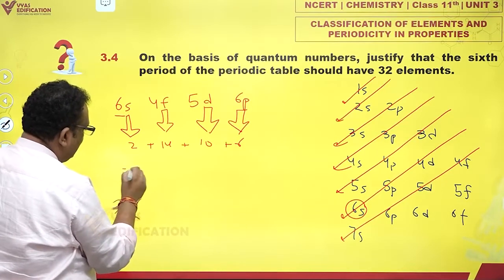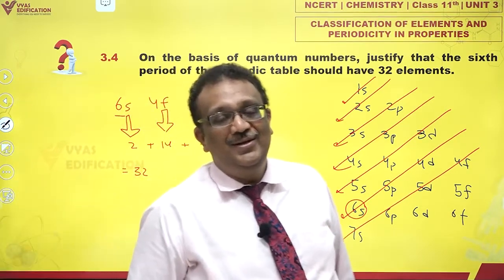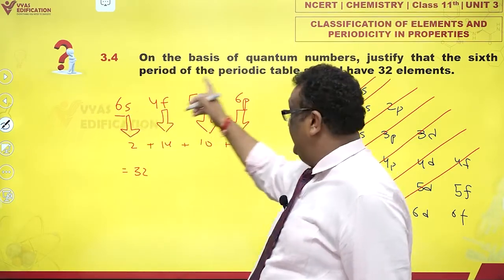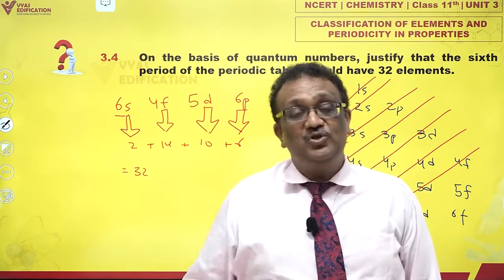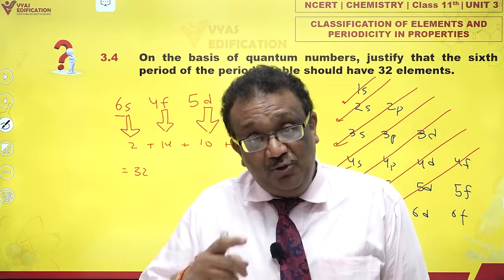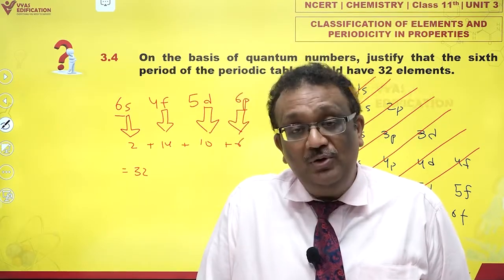If I add this number, I get 32 electrons. So beginning from 6s and ending in 6p, I possibly can add 32 extra electrons. That means the nucleus also can contain 32 more protons.